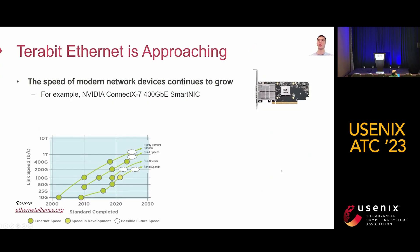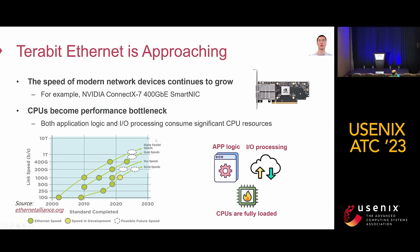Another background: terabit Ethernet is approaching. The speed of modern network devices continues to grow. For example, NVIDIA has published its 400 gigabit Ethernet smart NIC. In contrast, the growth speed of CPUs is stagnant and they are becoming a performance bottleneck. Complex application logic and I/O processing consume significant CPU resources, leading to fully loaded CPUs.